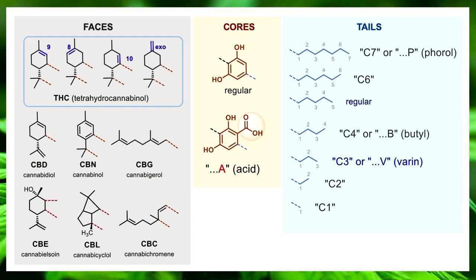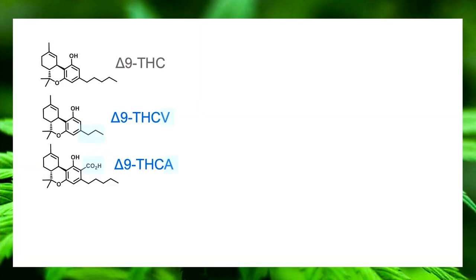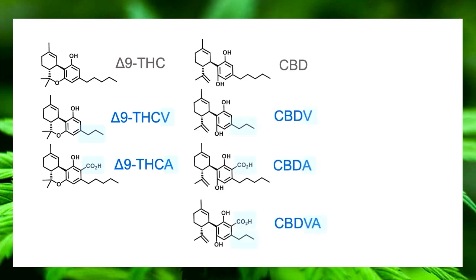The next two most common tail lengths are C4 and C7. Knowing that, if you see THC and recognize that a change to the tail is still a cannabinoid — still in the THC variety — you just add a V and call it a varin. A change to the acid core you just add an A. And if you make a change to both the tail and add the acid, you add both letters — so you call it CBDVA, for example.